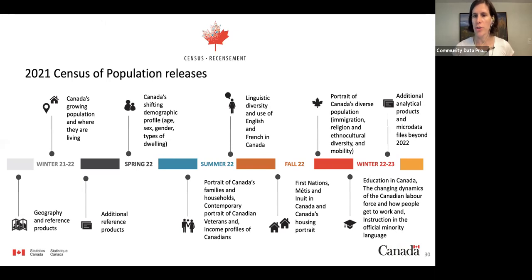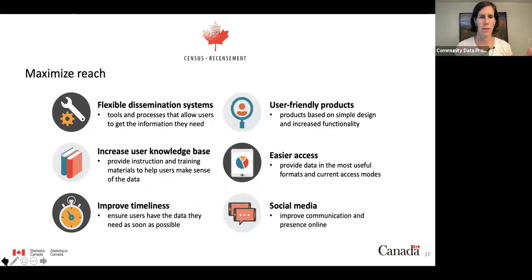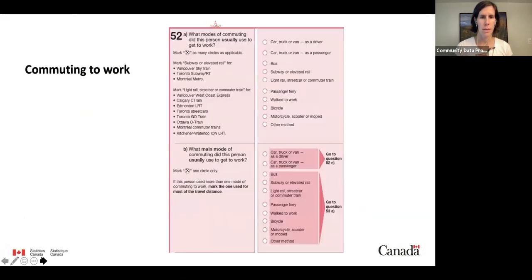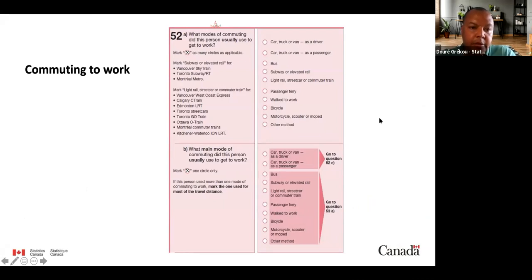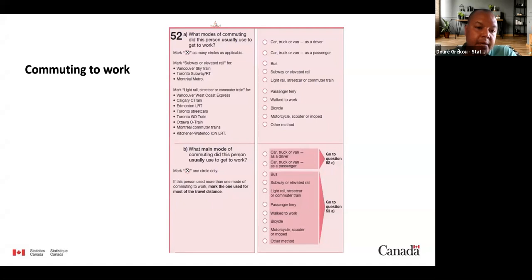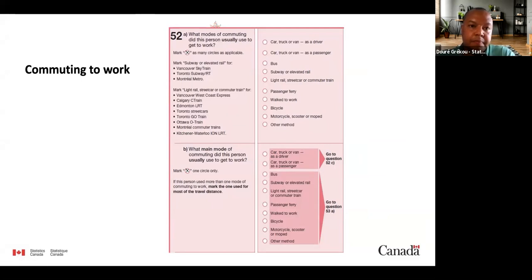Q&A: Emily asks for clarification on the two commuting mode questions. In question 52A, you list all modes used — for example, car then bus. In 52B, you indicate the main mode, defined as the one that takes most of the time. Question 52B capturing the main mode has been around before; 52A on all modes is the new addition. Respondents answer based on how they commuted on census day, May 11th — it is truly a snapshot in time.